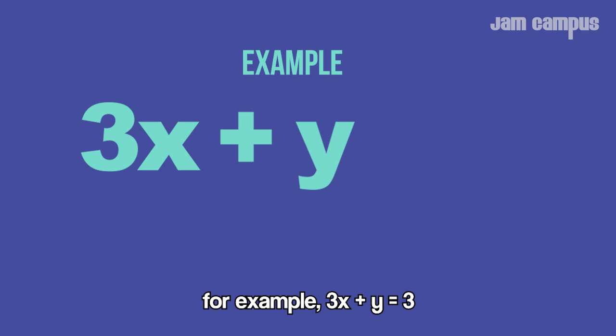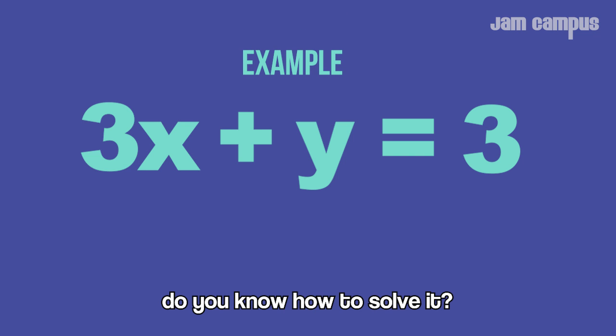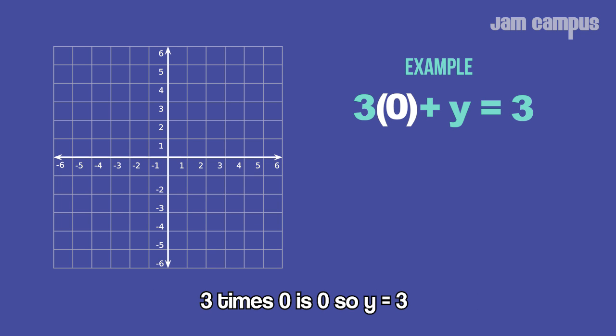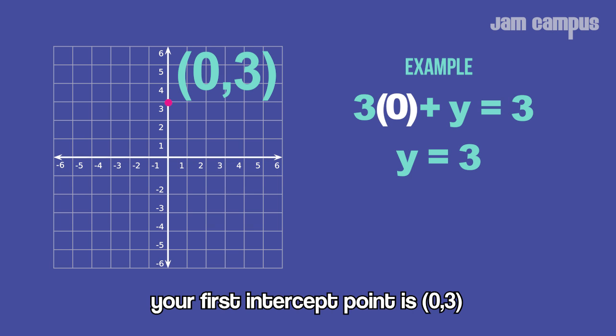For example, 3x + y = 3. Do you know how to solve it? First, solve for y by putting 0 for x. 3 times 0 is 0, so y equals 3. This intercept point is (0, 3).